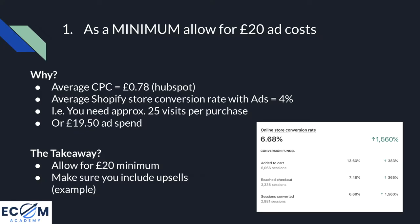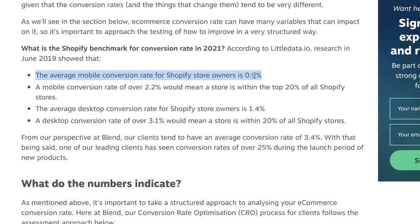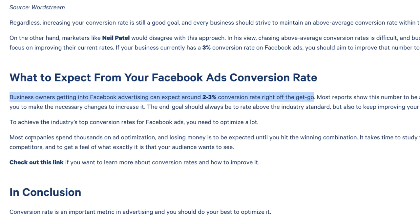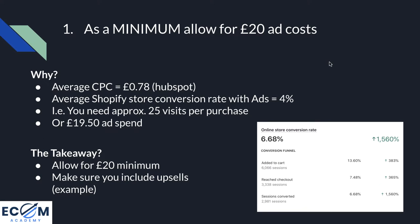If we do the maths: the average cost per link click according to HubSpot is 78 pence. The average Shopify store conversion rate with ads I've put at 4%. Blend Commerce says the average mobile conversion rate is 0.9%, and TrustMary.com says businesses getting into Facebook advertising can expect around 2% to 3% right off the bat, with a target of 6%. I've gone with 4% since we're running direct marketing ads. Applying that 4% conversion rate to a 78 pence cost per click means we need approximately 25 visits per purchase — 25 times £0.78 equals £19.50 in ad spend. Basing numbers on worst case scenario, a customer buys one product and we can still make a profit on the front end, not accounting for upsells or retargeting.